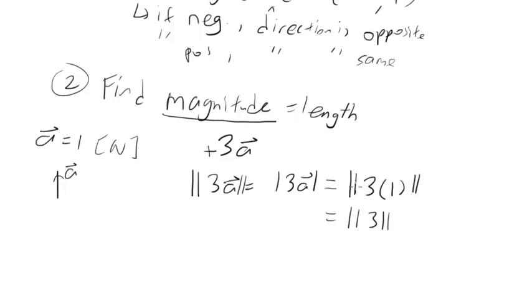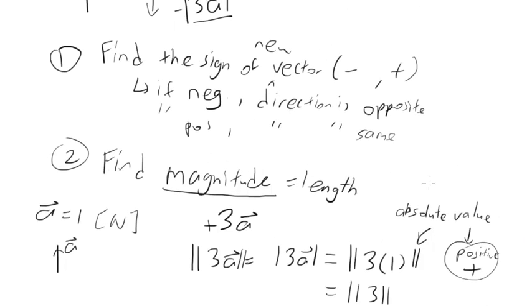And since, remember these bars means absolute value, which means positive. So, these bars mean absolute value, which means positive, or plus. Since our number in the bars is really positive, we can just write it out as 3. So, what do we have so far? We know the magnitude, and we know the direction from step 1.